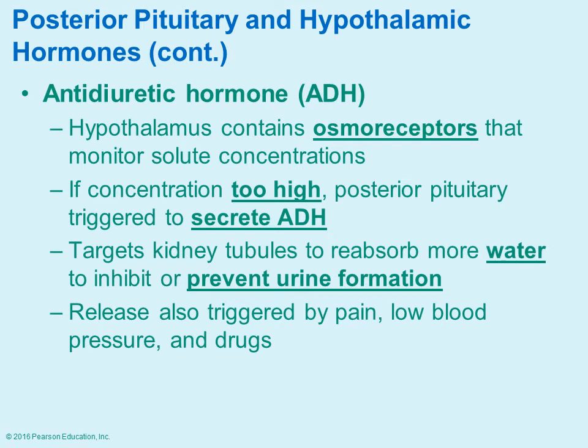If you're dehydrated, the reverse happens. ADH is secreted in response to dehydration, targeting kidney cells to signal: do not release a lot of water — we need to reabsorb it, putting that water back into the blood so you remain hydrated. You would have less urine production because you don't want to lose any more fluid when you're already dehydrated.